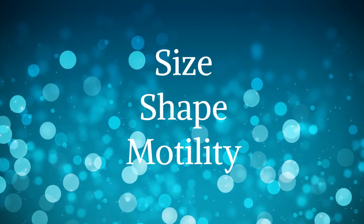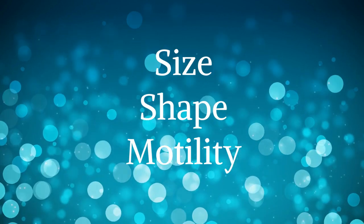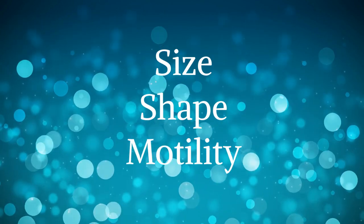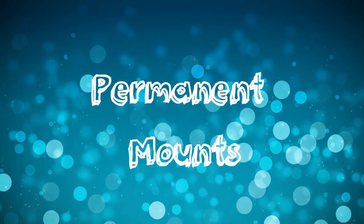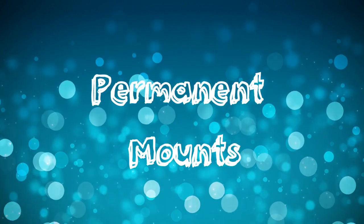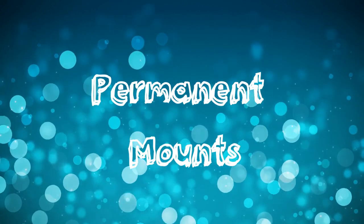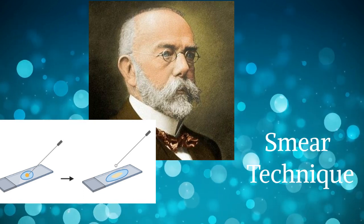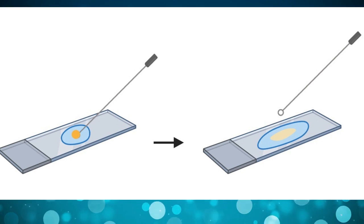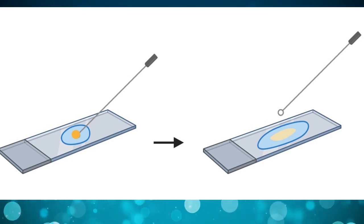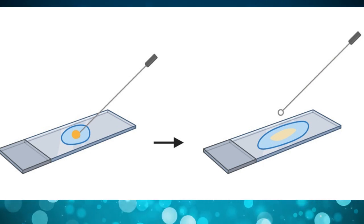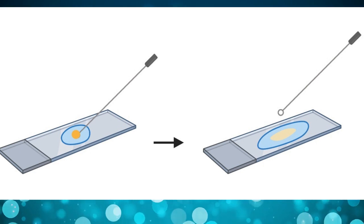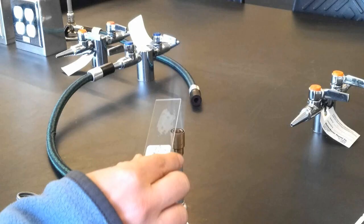Short-term mounts give us a true assessment of the size, shape, and motility of bacteria. For long-term study, we need to make permanent mounts using the smear technique, developed by Robert Koch more than 100 years ago. We begin by spreading a thin film made from a liquid culture or directly from a bacterial colony on a slide and allow it to dry.